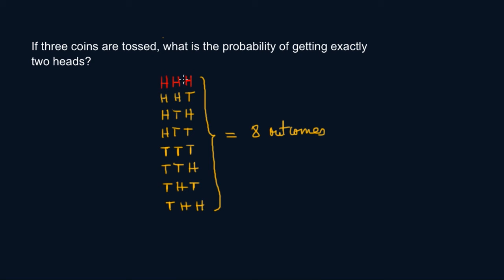These are your combinations — nothing more, nothing less. Now, what's the probability of getting exactly two heads? We count how many times we have two heads: there's one here, another one, and another one — so three times. The probability is then equal to three desired outcomes out of the total eight outcomes.